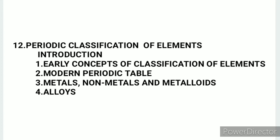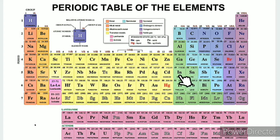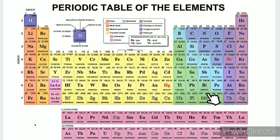In the Modern Periodic Table, there are 118 elements. This table was developed by scientists. The mass number is denoted by A and the atomic number is denoted by Z. The arrangement is based on the atomic number.